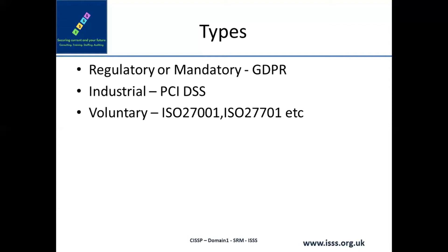The second type is voluntary compliance, where an organization willingly chooses to undergo a particular standard — there is no law requiring it. Customers typically go for ISO 27001 or ISO 27701 (PIMS), ISO 22301 for business continuity, and ISO 20000 for IT service management. ISO 27001 is for security, ISO 20000 for service management, ISO 22301 for business continuity, and ISO 9001 for quality.